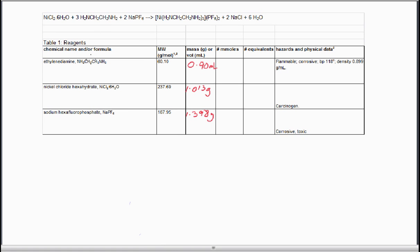In this video we're going to look at how you construct a reagent table using the chemical reaction that we talked about in the last video. That's represented here with the balanced equation that we finished up with last time. It's the reaction of nickel chloride with ethylenediamine and sodium hexafluorophosphate.